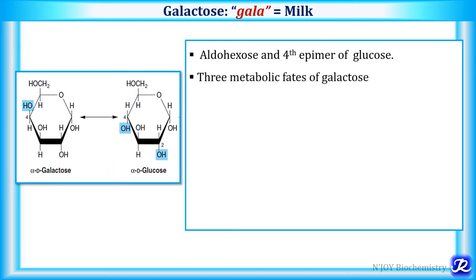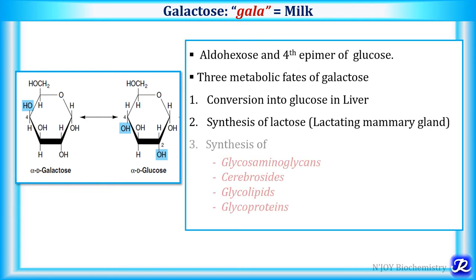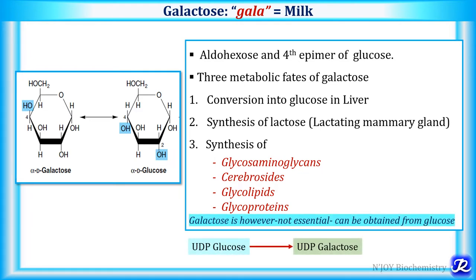There are three metabolic fates of galactose in the body. The first is conversion of galactose into glucose, which occurs in the liver cytosol. Second, it is involved in the synthesis of lactose in the lactating mammary glands. Third, galactose is used for synthesis of glycosaminoglycans, cerebrosides, glycolipids, and glycoproteins. However, galactose is not essential because it can be obtained from glucose — in the body UDP glucose can be converted into UDP galactose by UDP hexose epimerase enzyme.